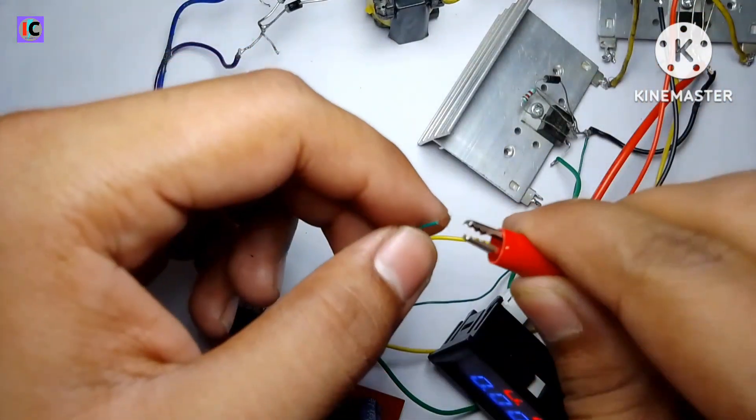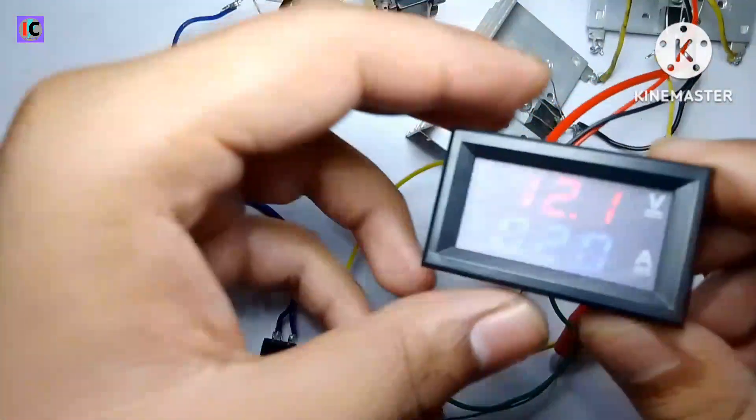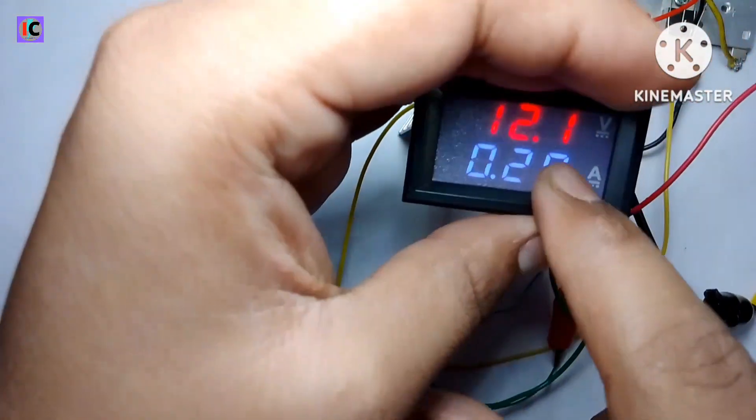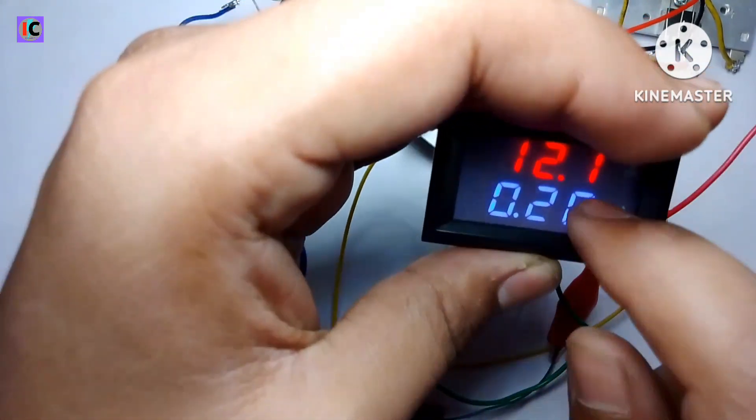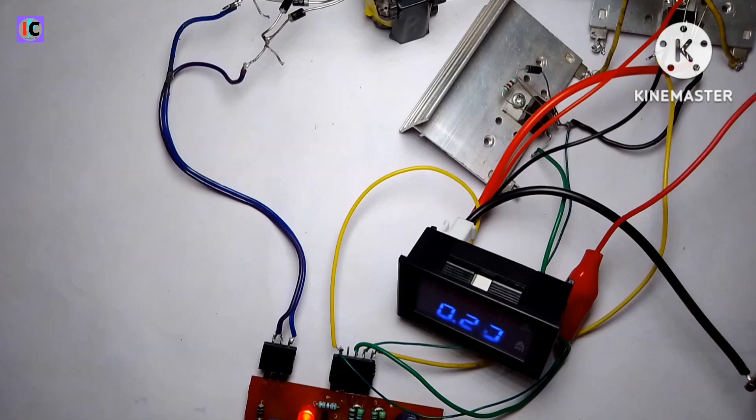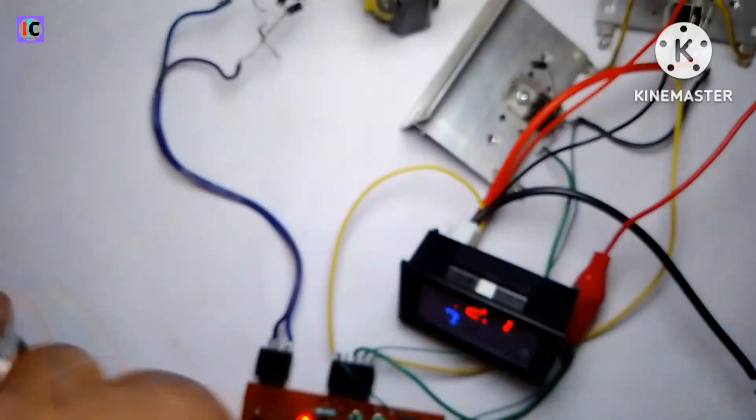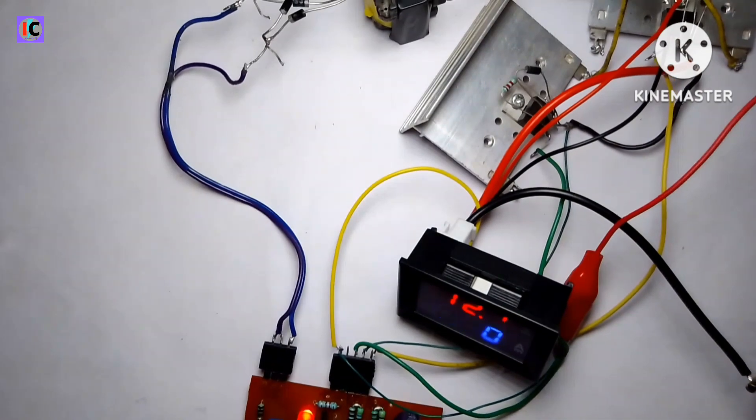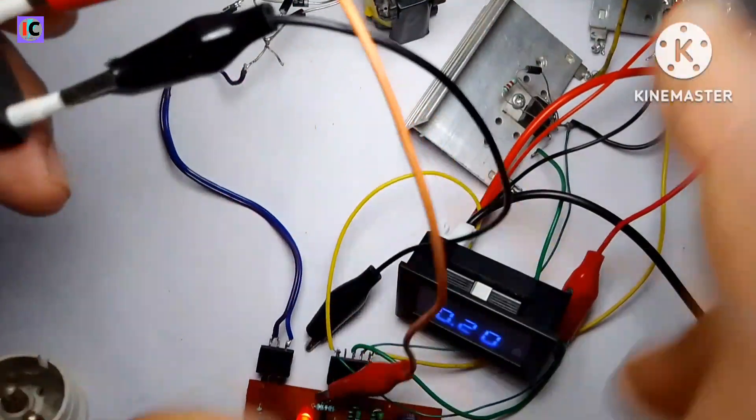Here you can see I powered the whole system. The input voltage is 12 volts and the no-load current is 200 milliamperes, which is very efficient. Here I have a 9 watt LED. First we have to attach this using this holder and crocodile clips.